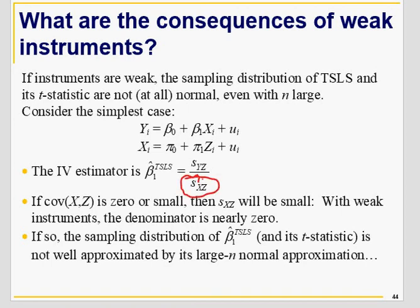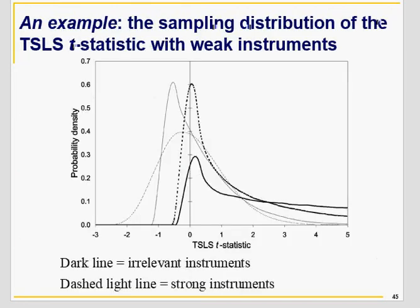If the covariance between X and Z is very small, beta-1 2SLS may be very volatile and fluctuate a lot. If it's close to zero, beta-1 2SLS may go to infinity. The weaker the relationship between X and Z, the poorer the distribution of 2SLS — it will no longer be approximately normal, as is often assumed. If you have weak instruments, your distribution will be non-normal, as I'll demonstrate through simulation.